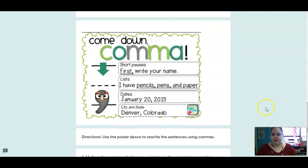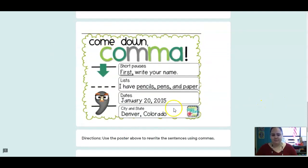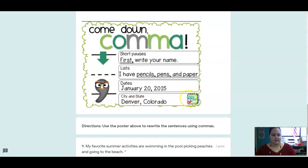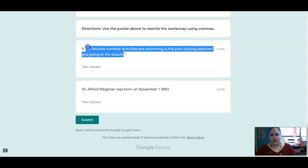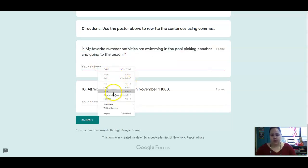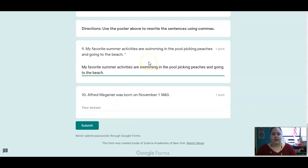And the last two questions, we're going to review these commas again. So remember, we use commas when we're doing a short pause, when we're writing a list, when we're writing dates, or when we're writing cities and states. So the same thing, you're going to rewrite these sentences, so you can go ahead and copy this if you want. So right-click, copy, right-click, paste, and then add in the commas where they belong. And that is all for today. Have a wonderful rest of your day. I'll see you next time. Bye, Adams.